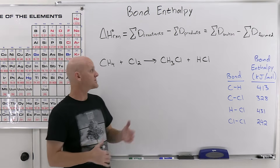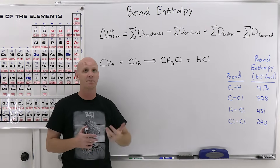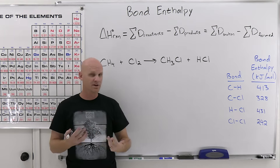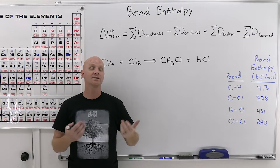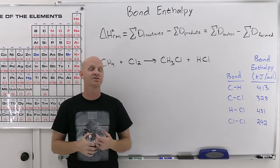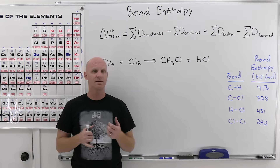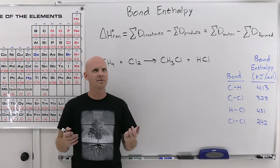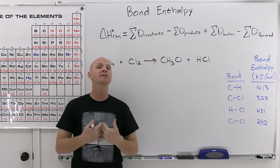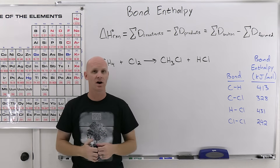Bond enthalpies represent the energy it takes to break a bond. Breaking a bond is an endothermic process requiring absorption of energy. When you form a bond — when two atoms come together — it actually releases energy and is an exothermic process. Students don't often struggle with the idea that breaking a bond costs energy, but they might think making a bond also costs energy. No — when you make a bond, it releases energy. Two atoms come together, it lowers their energy, and the excess energy is given off.